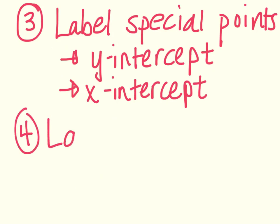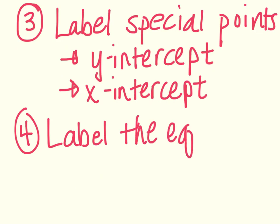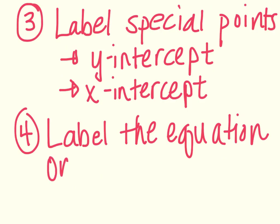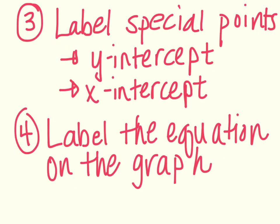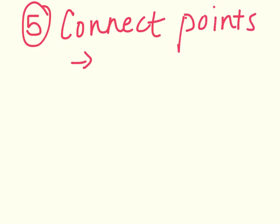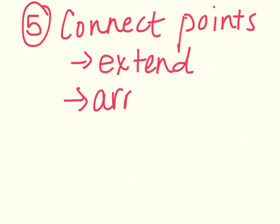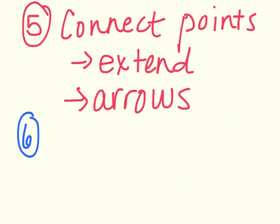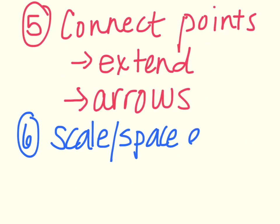You should also label the equation on the line — so if you're graphing a line or a parabola, label the equation right on the graph. Next, if you're drawing a line or graphing an equation or a parabola, connect the points. Please make sure you extend your line and put arrows on the end. Finally, when counting by something, make sure you scale and space it out evenly so that equal intervals take up equal space on the graph.